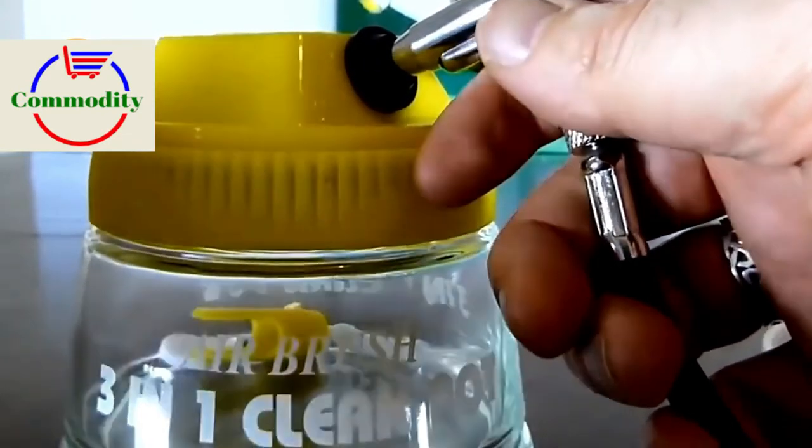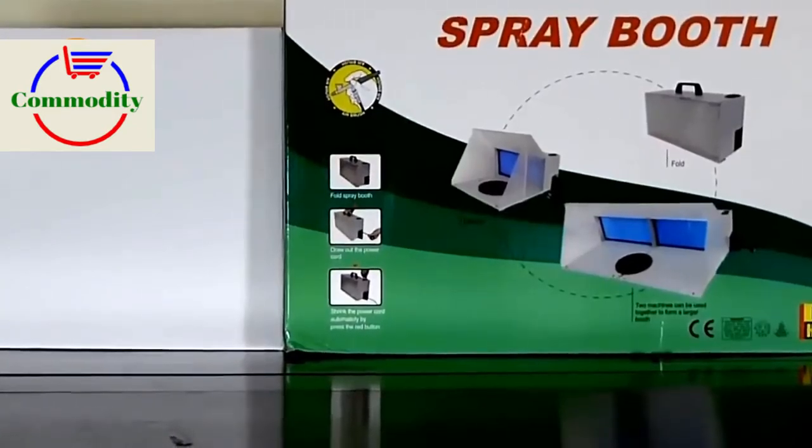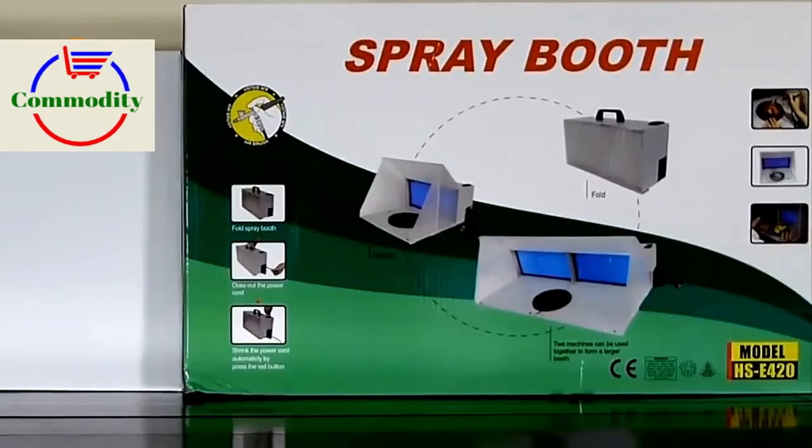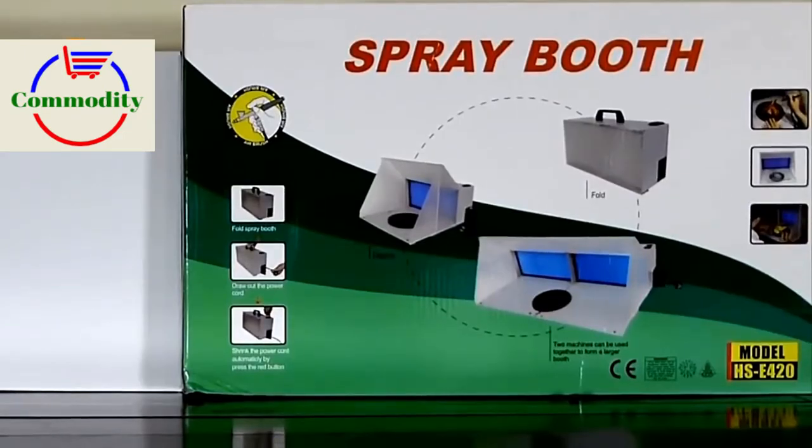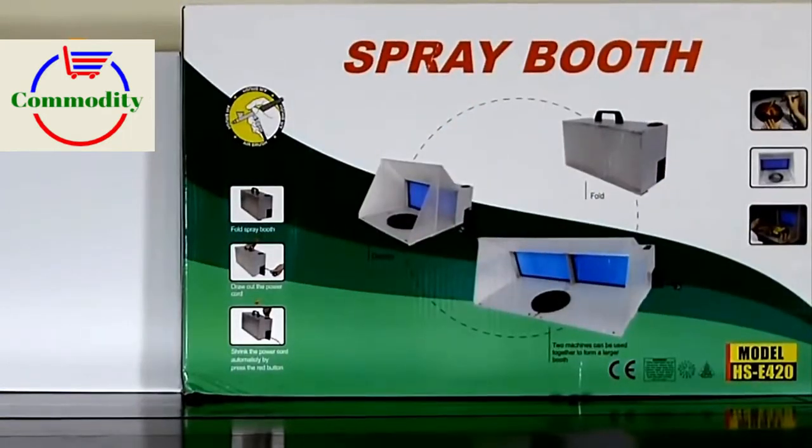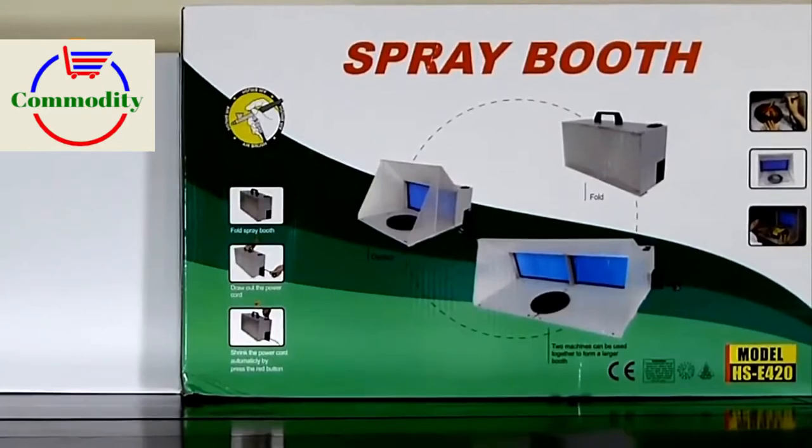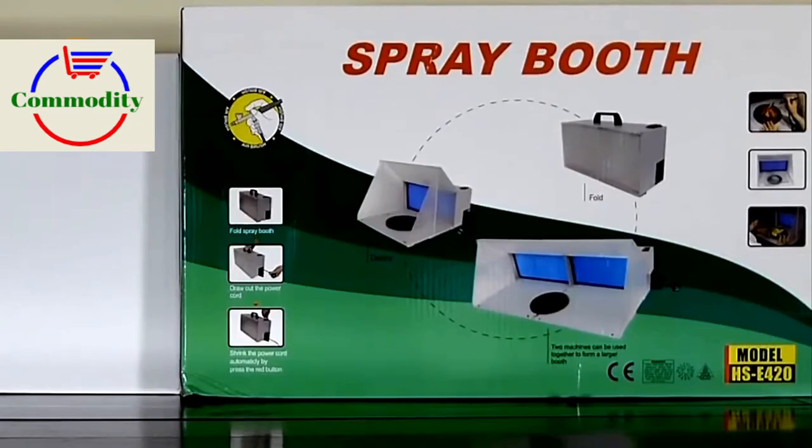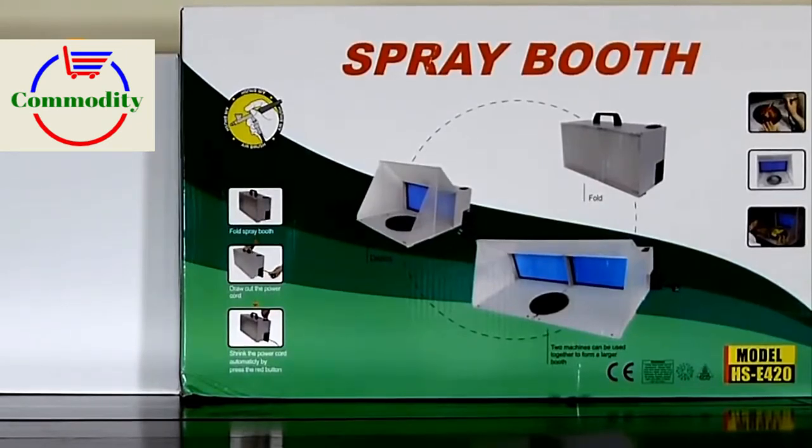Just before I finish up the video, you may have noticed when I was talking about the cleaning pot there, in the background I've also got this box—it's a spray booth. I quite like the idea of being able to do my airbrushing here in the kitchen area where I do some of my work. I thought a portable booth would be useful. It comes in a little briefcase setup that folds out to the front area there. It comes with a turntable so you can spin your models around and so on, whatever you want to spray, without having to touch it with your hands.